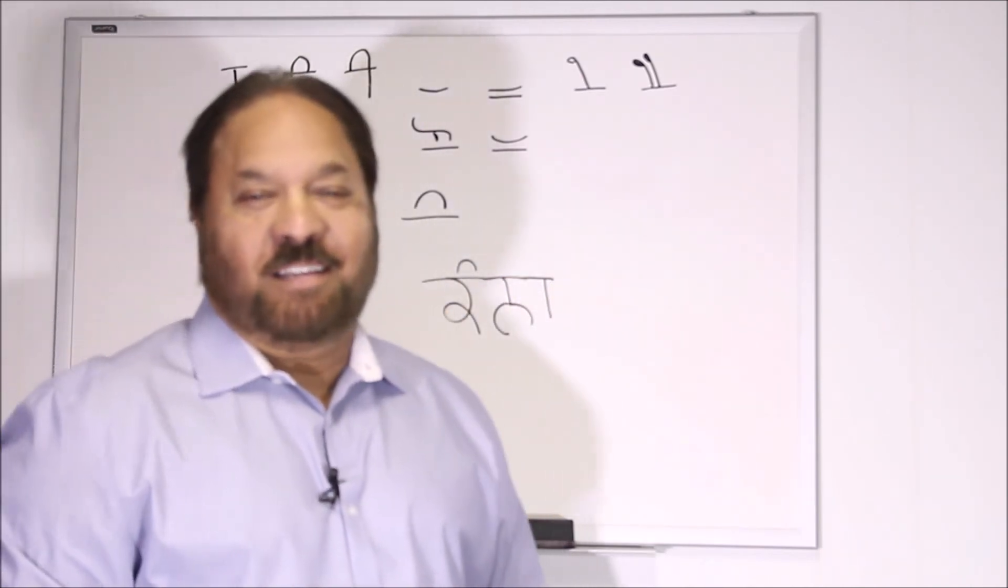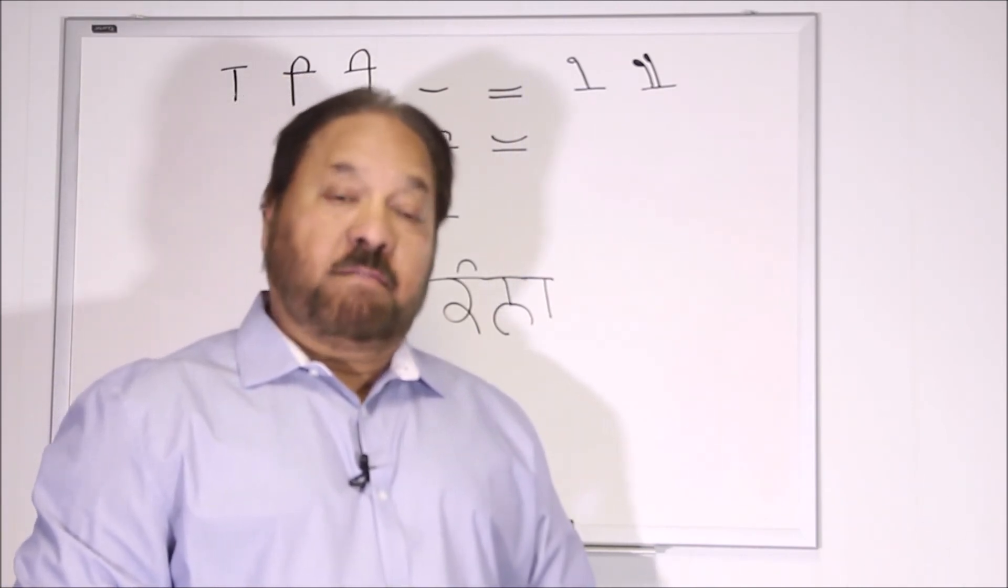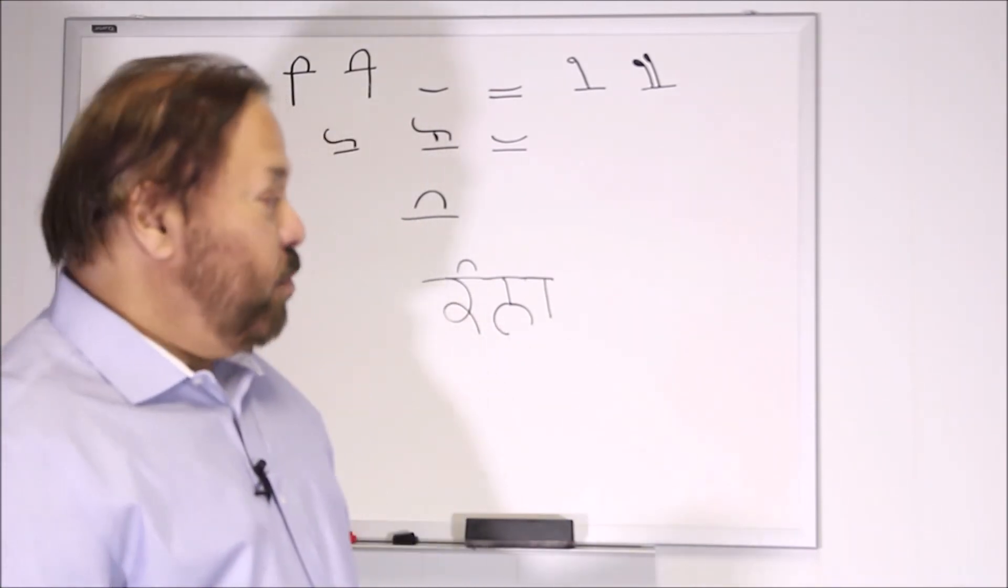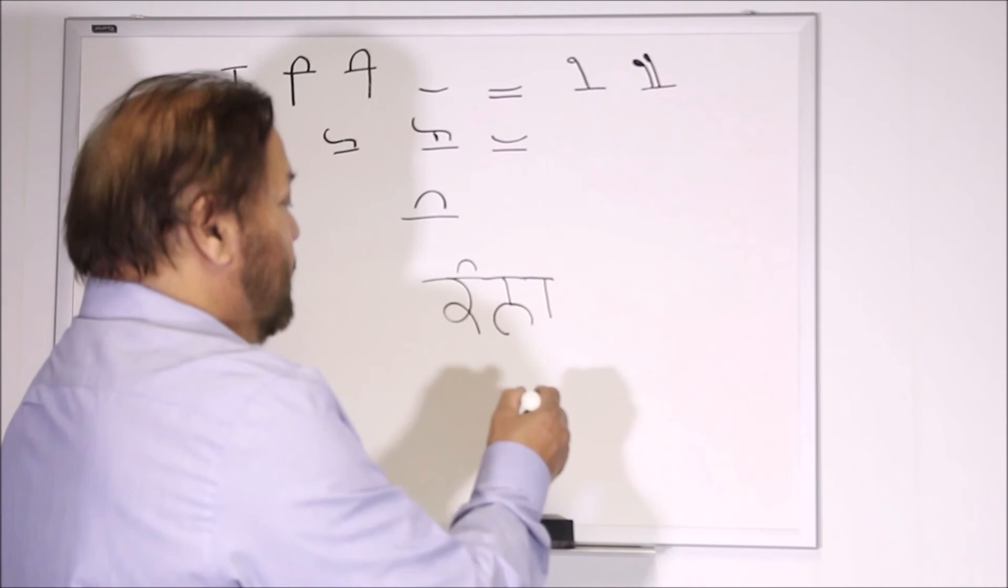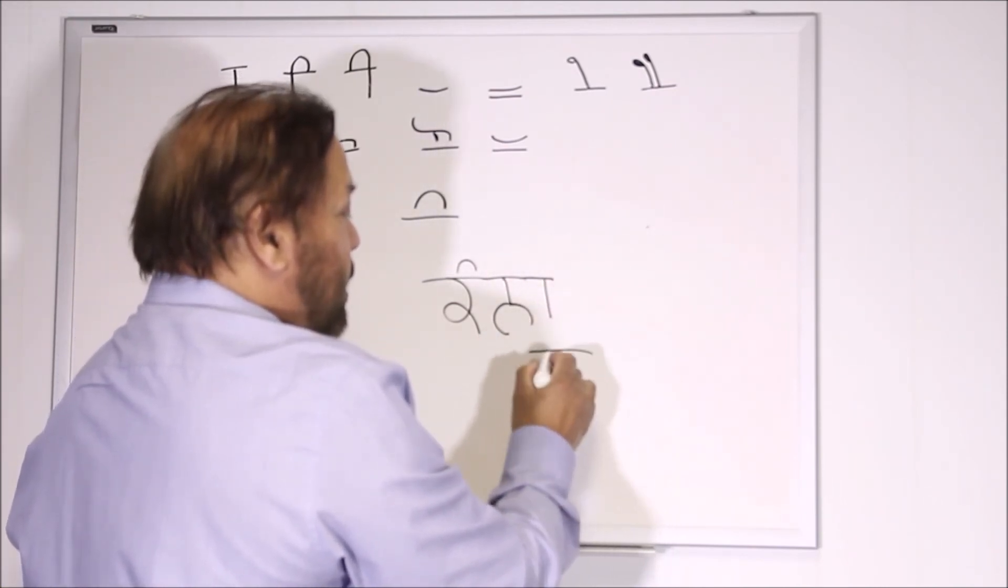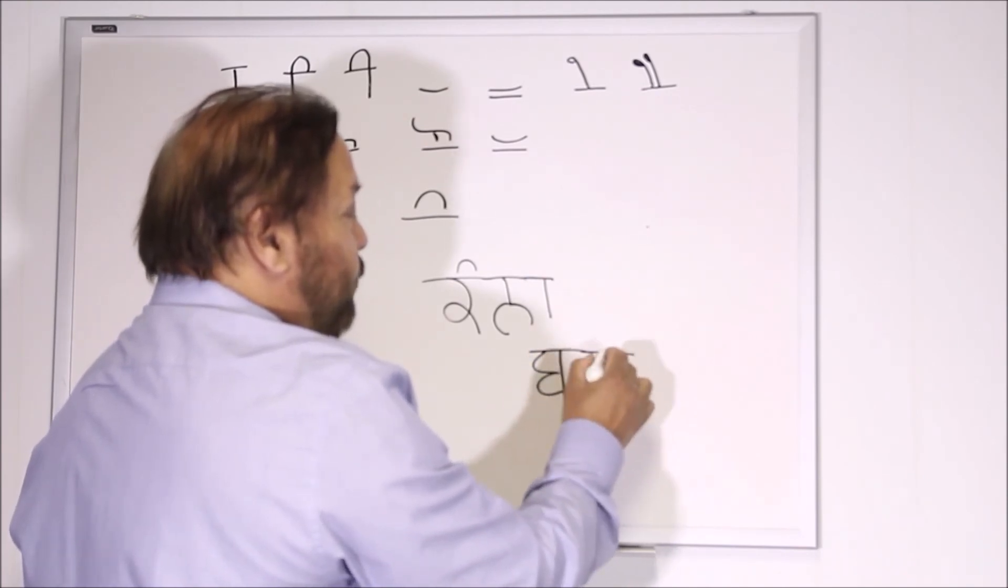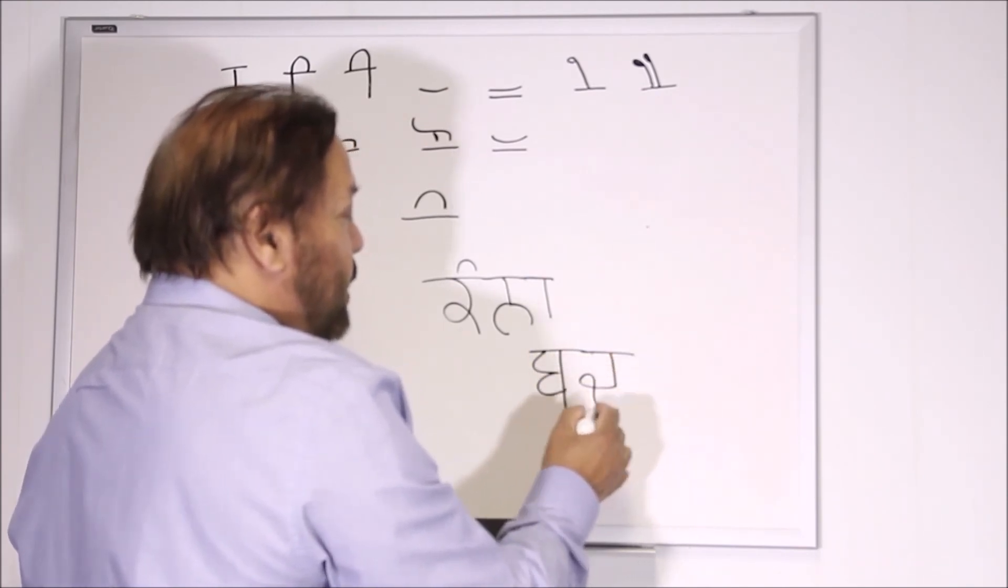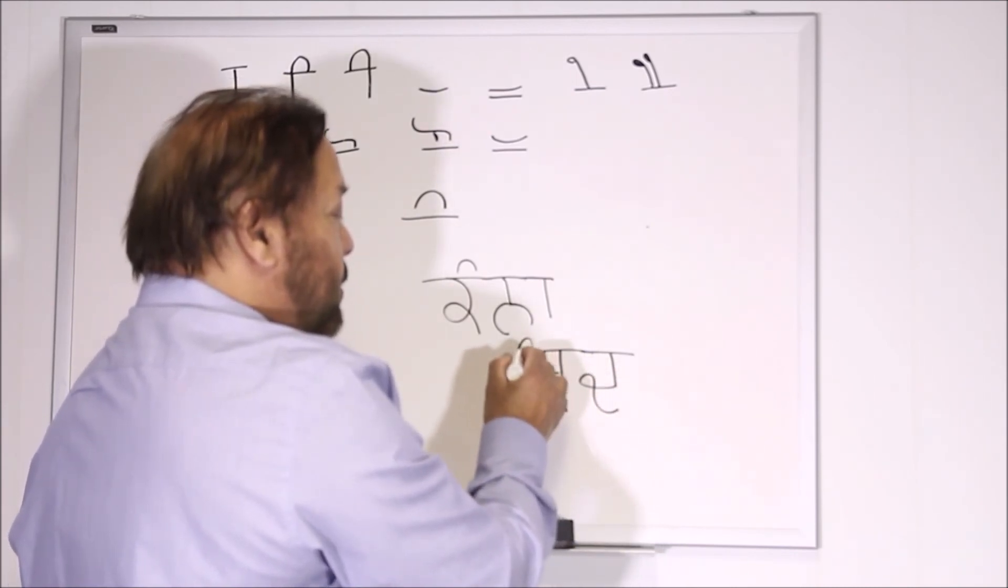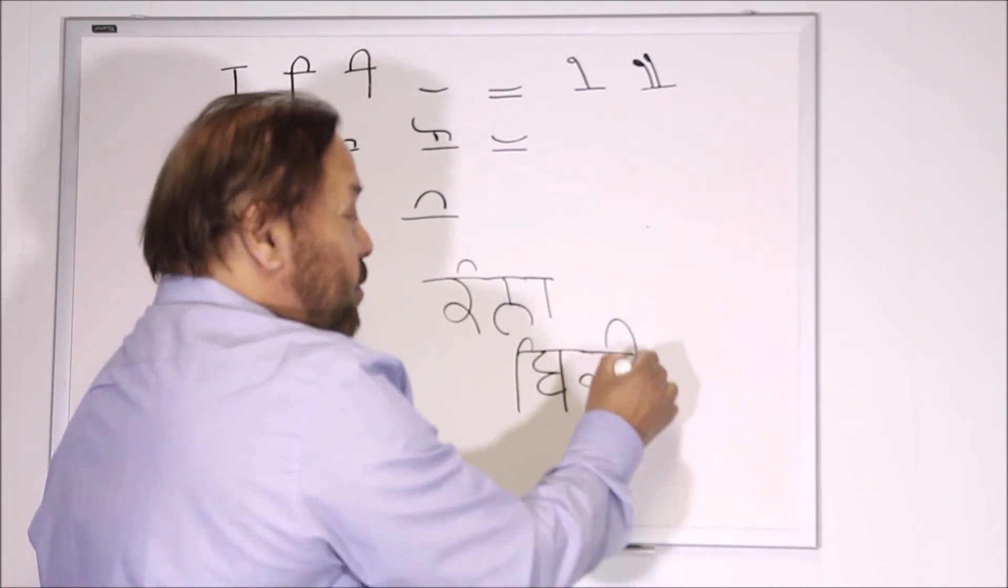And I probably use one for the next one, Bindi. We write down Babba, Dada, Babba for Ba, Dada for Da, Sihari here Di, Bihari, Tippi. It is read Bindi.